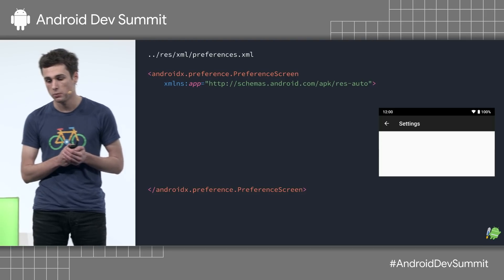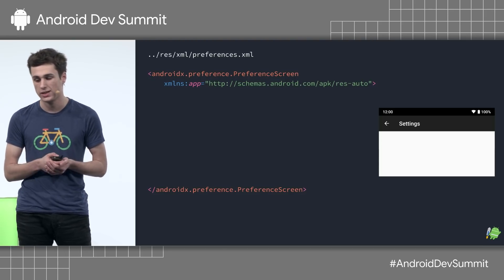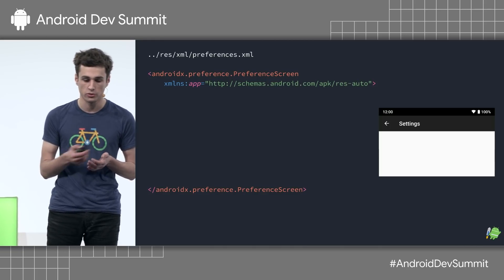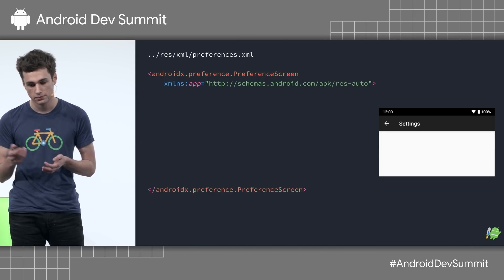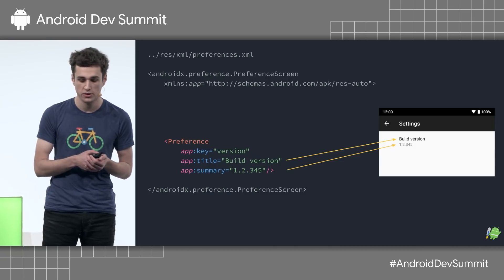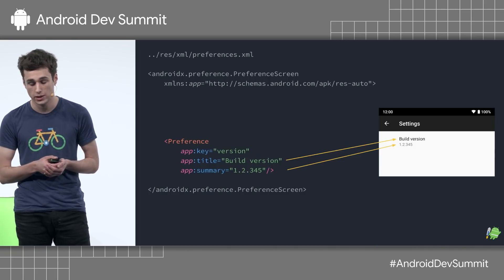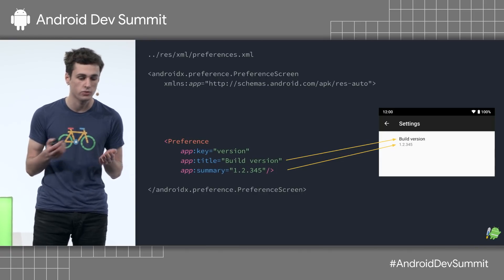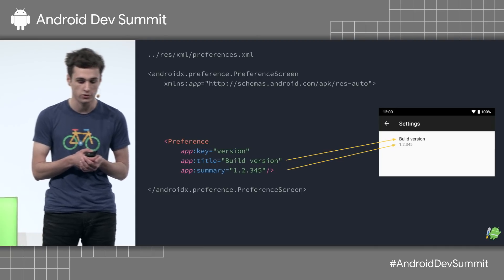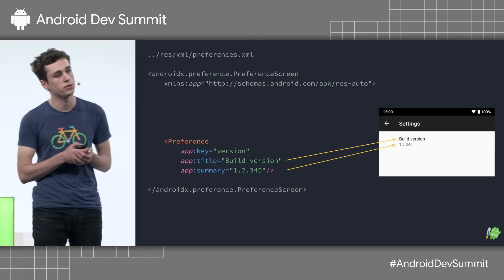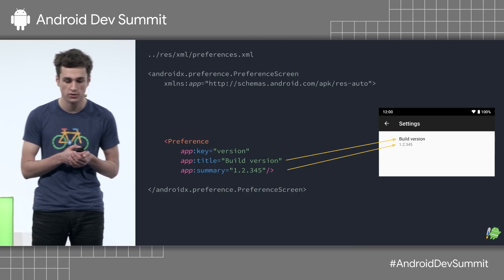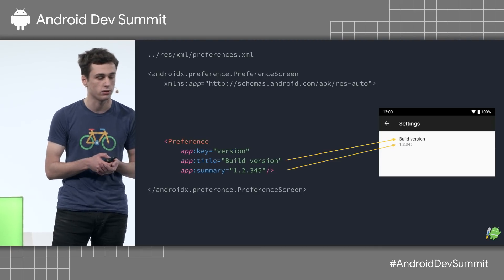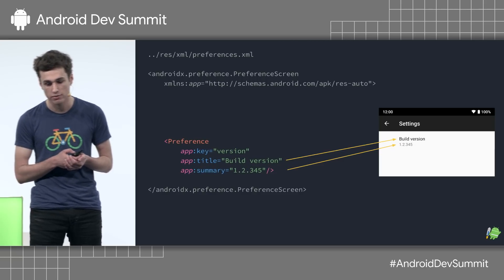This is our XML file. We start with a root PreferenceScreen object, and this basically is the main container for the entire hierarchy. Everything should go inside of this, and it should be the root element. Note that you should also place your preference XML resource files in the res/xml directory. Now we can add our first preference. This is a basic preference — it doesn't have any widget associated with it. We have three important attributes: the title and the summary are the visual title and summary displayed to the user on the screen. The key is pretty important: if this preference were to persist any state to the device, this is the key that the shared preference instance would use. Also, this key allows you to interact with this preference later on in your lifecycle. So it's very important to declare a key for every preference in your hierarchy.